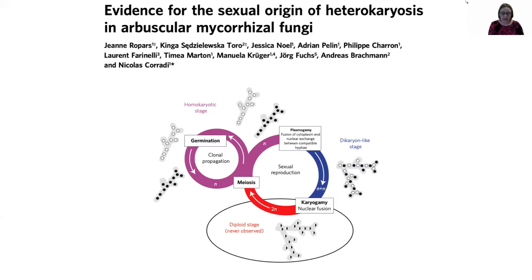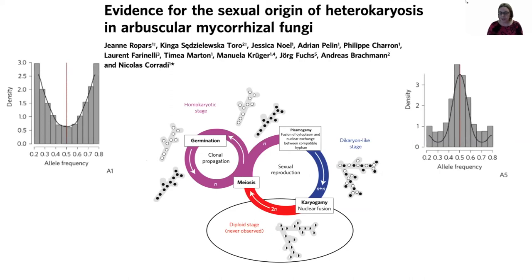Based on these observations, they outlined a possible life cycle for AM fungi: a clonal cycle where strains having only one mating type propagate clonally, and then if two strains with different mating types meet they could fuse and form a dikaryon-like stage, maintaining those nuclei at a 50/50 ratio within the mycelia. It's likely the cycle would also include karyogamy at some point with the possibility for meiotic recombination, but this stage has not yet been seen and the evidence for recombination is still thin.